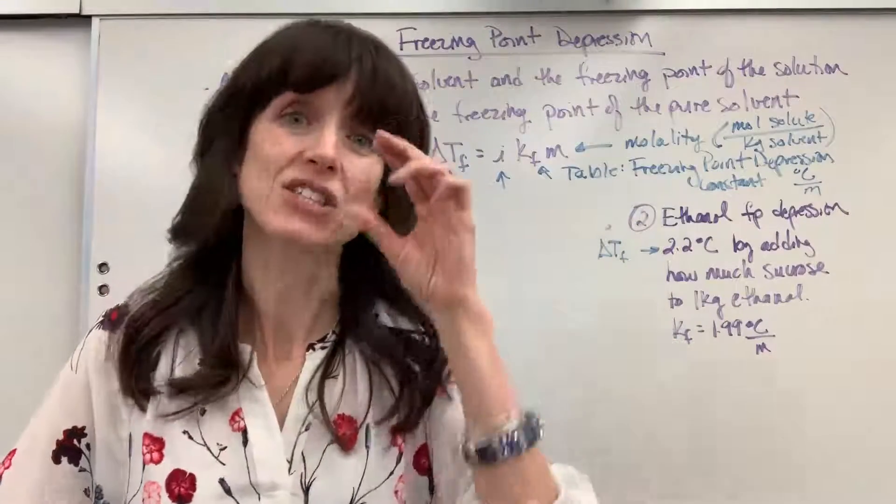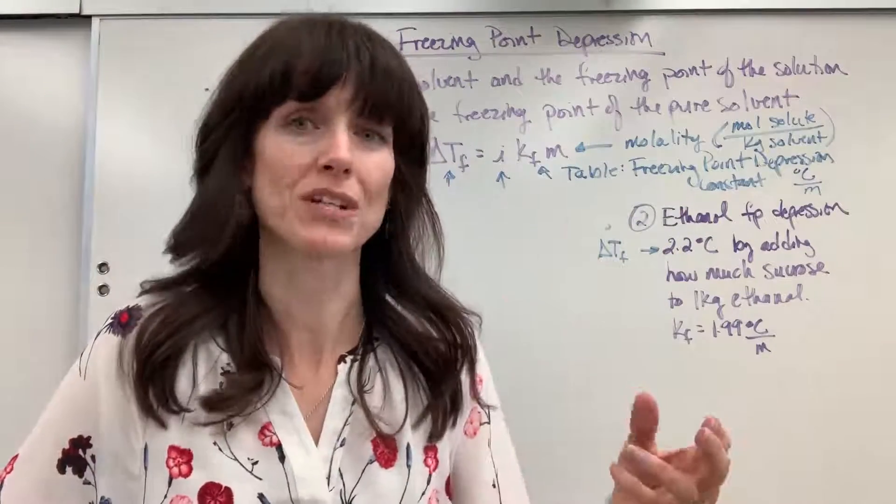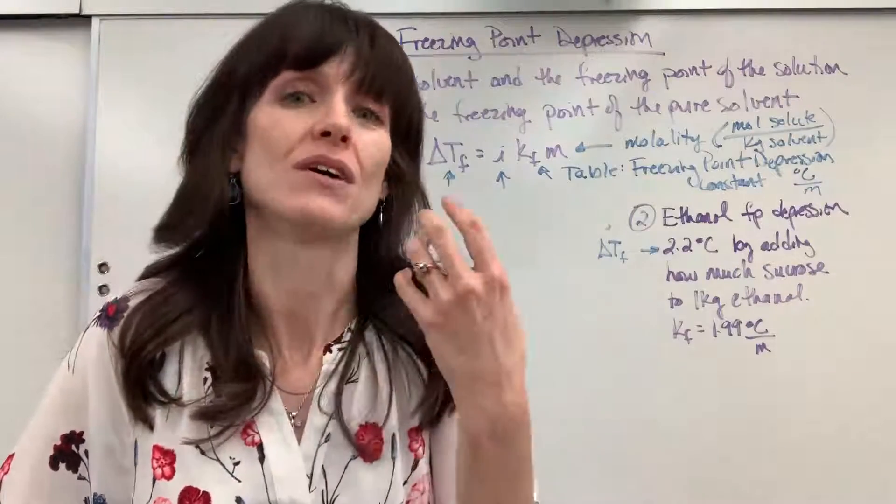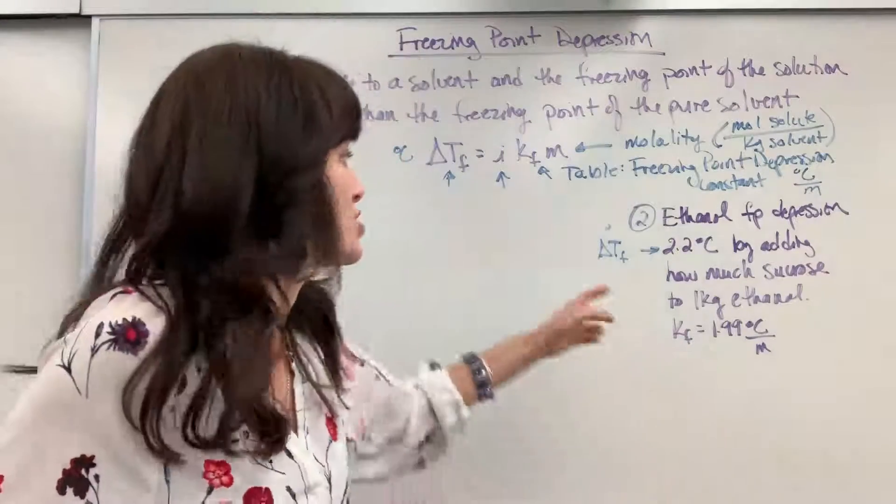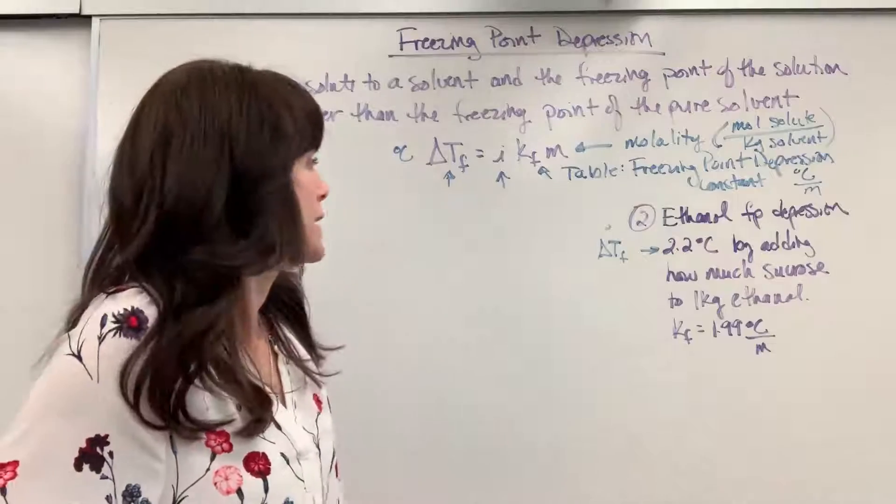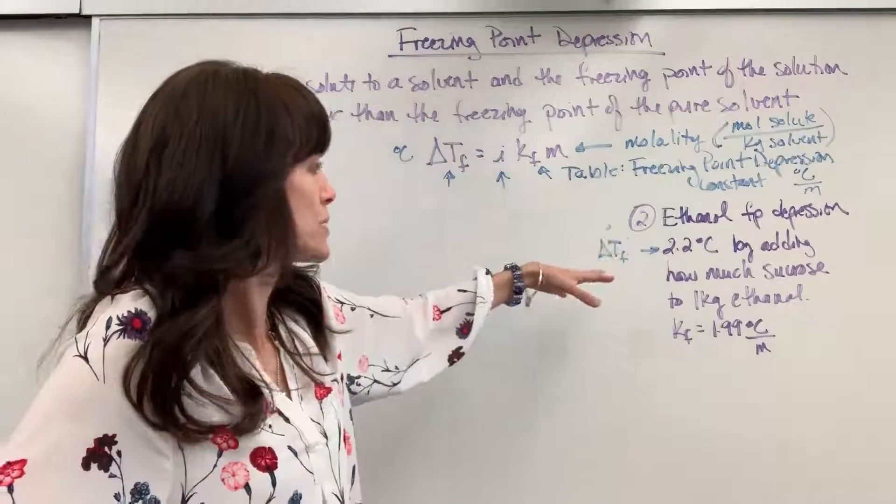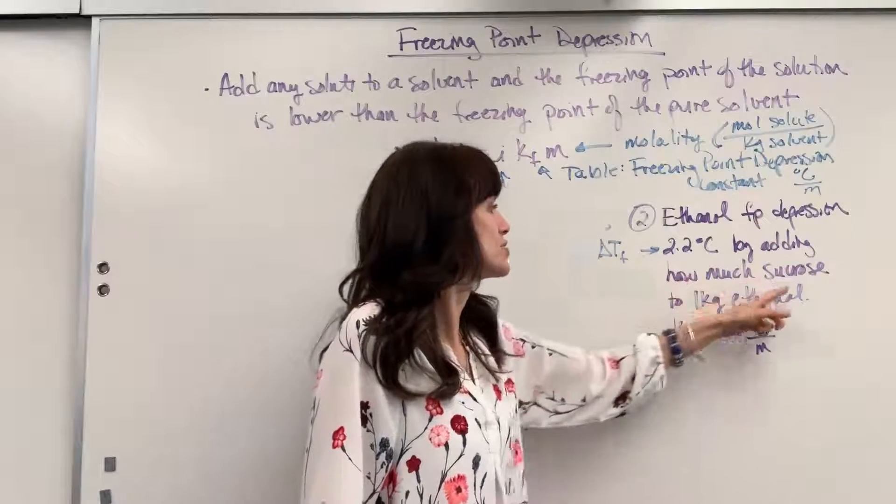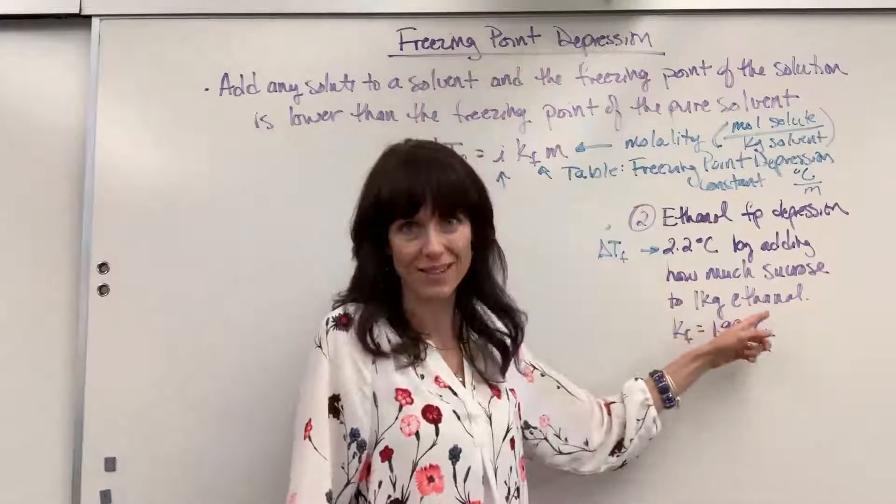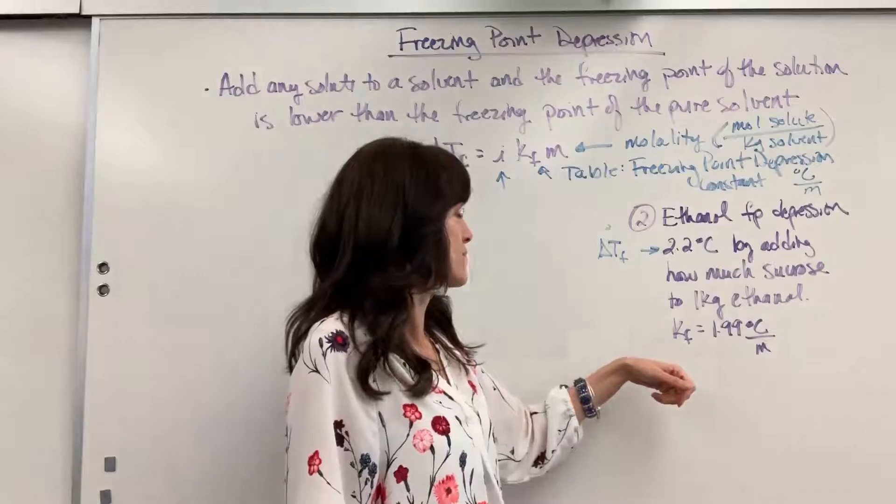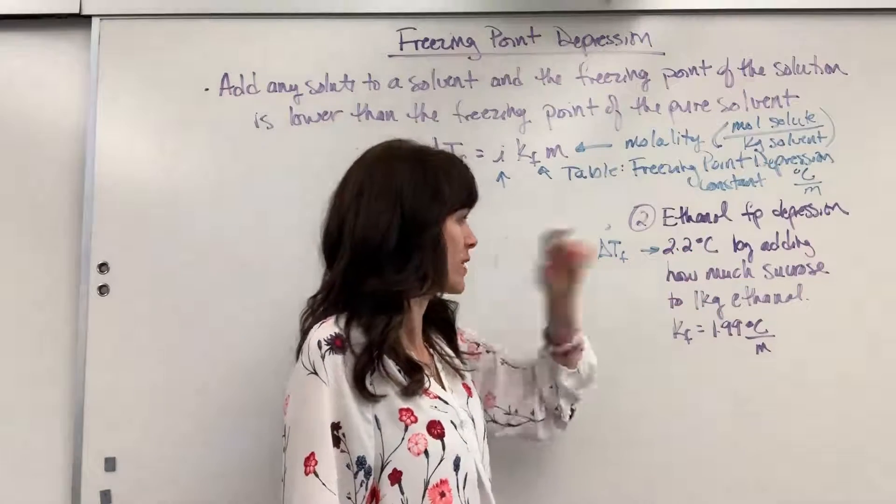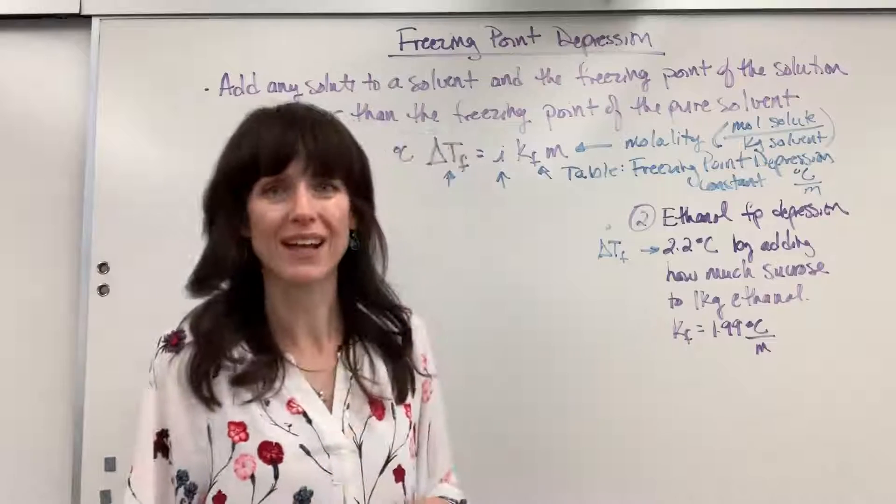So be really careful as you read this. That is telling us, hey, the change in the freezing point. The freezing point depression is 2.2. They're not telling us the actual new freezing point. That's the change in temperature. So the ethanol freezing point depression is 2.2 degrees C by adding how much sucrose to one kilogram of ethanol. So if we change the temperature 2.2 degrees and we have one kilogram of ethanol, well, how much sucrose do we have to add to that?